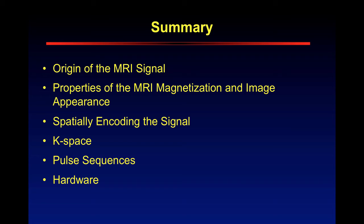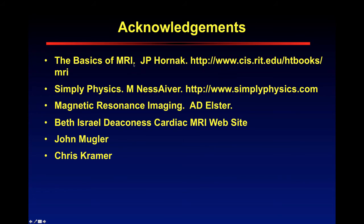In summary, we talked about the origin of the MRI signal, the properties of magnetization and image appearance, the gradients to spatially encode the signal, K-space and the use of Fourier transforms to produce the image, pulse sequences — T1 versus T2-weighted — and then hardware and the contrast agents relevant for this course. For references: the Basics of MRI, Simply Physics, Magnetic Resonance Imaging, and the Beth Israel Deaconess Cardiac MRI website. If you're really interested, talking to John Mugler, Chris Kramer, Fred Epstein, or Craig Meyer in the BME department would be a great place to start.